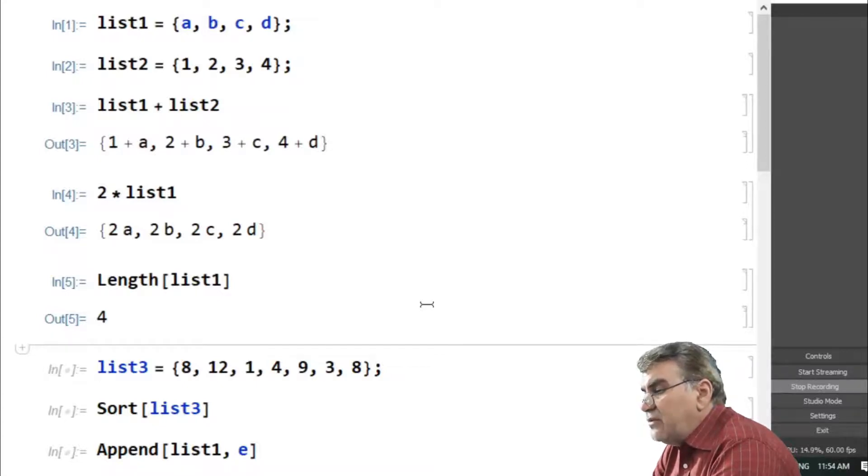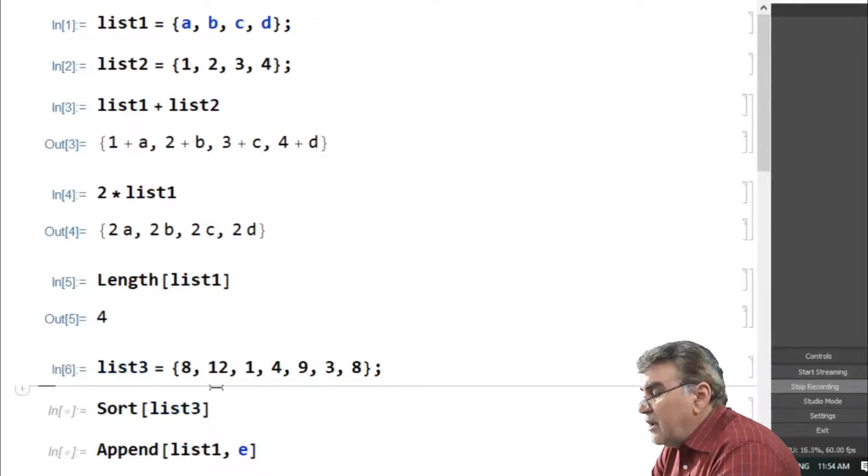The elements of a list can be arranged in ascending order by using the command sort. To understand this, consider a list of numbers whose elements are randomly arranged. Such a list I have written over here with name list3. You see the numbers are randomly arranged: 8 is less than 12, and 12 is greater than 1, 1 is less than 4, and so on.